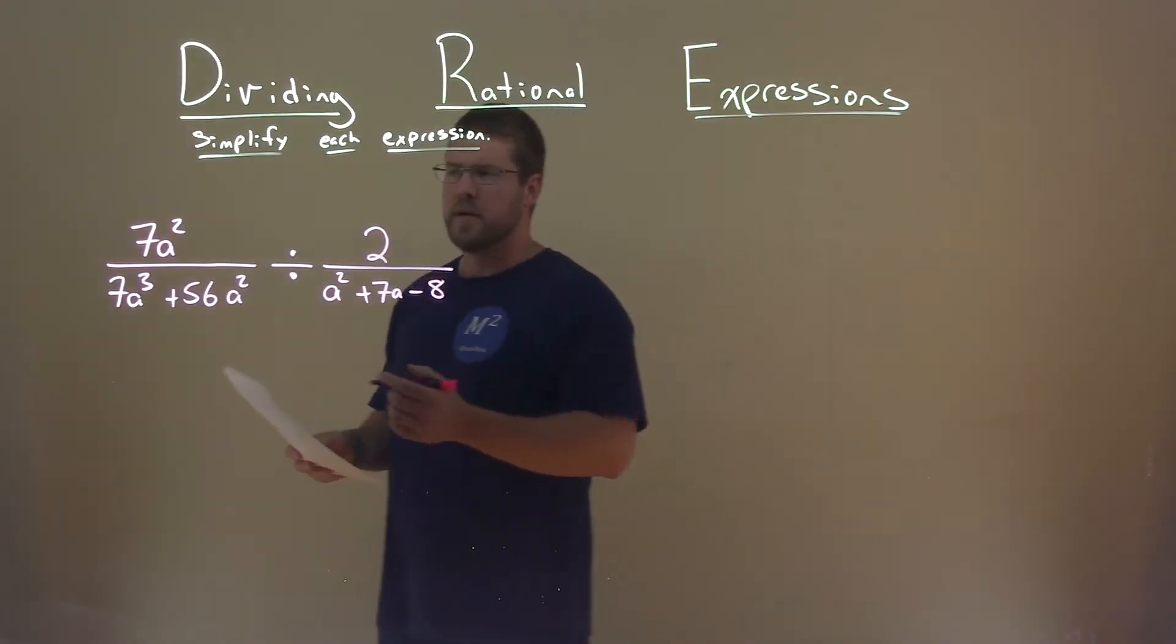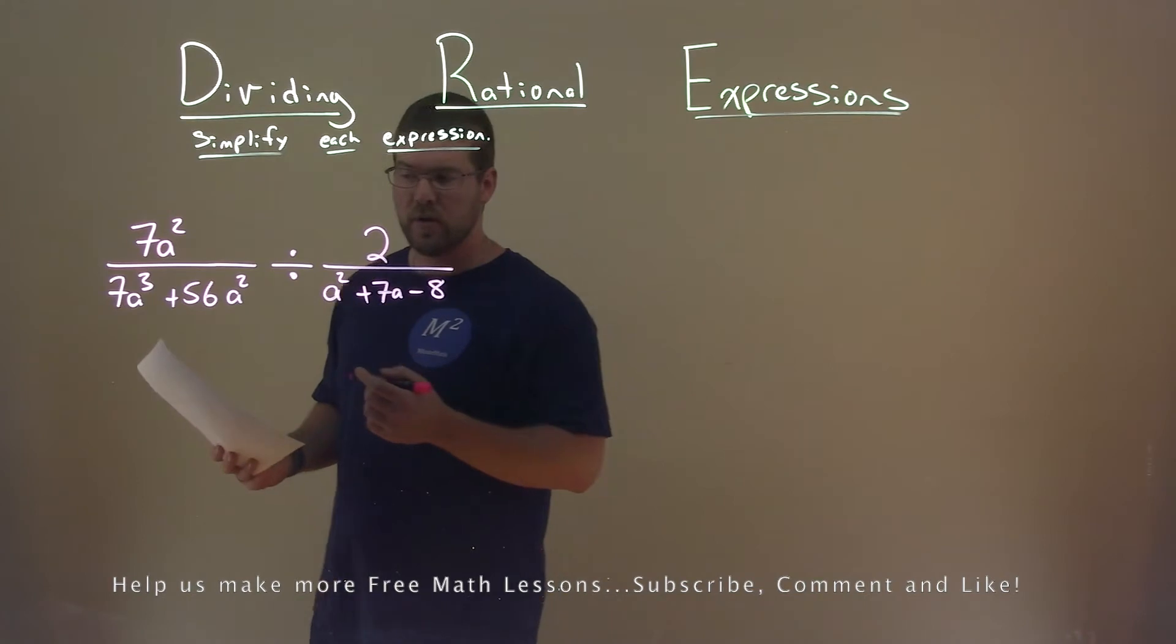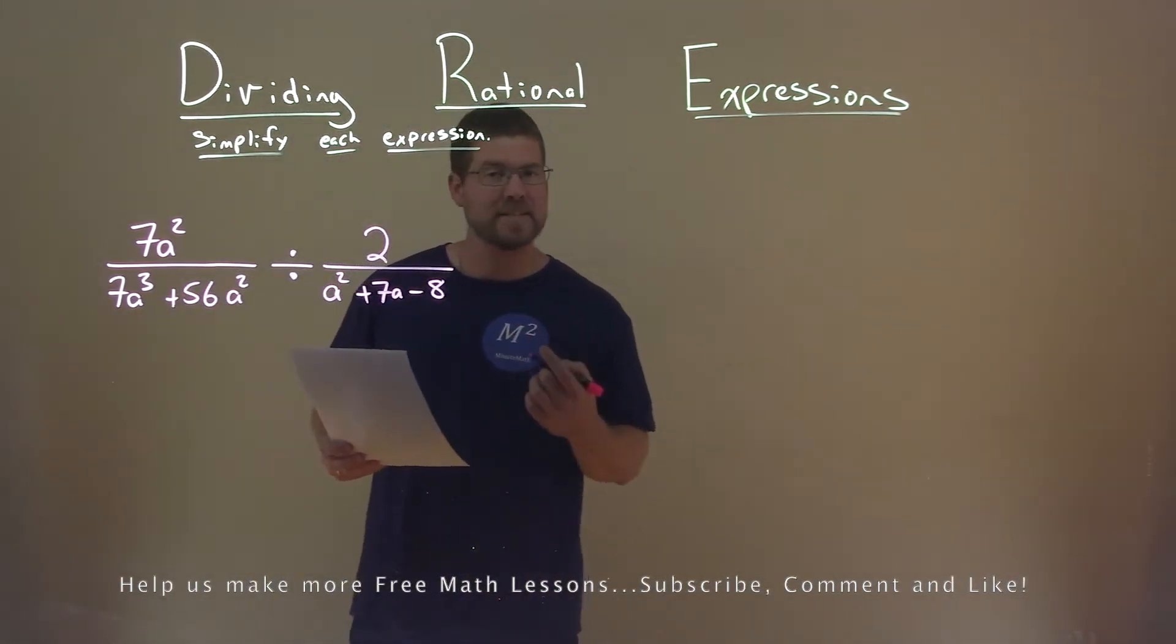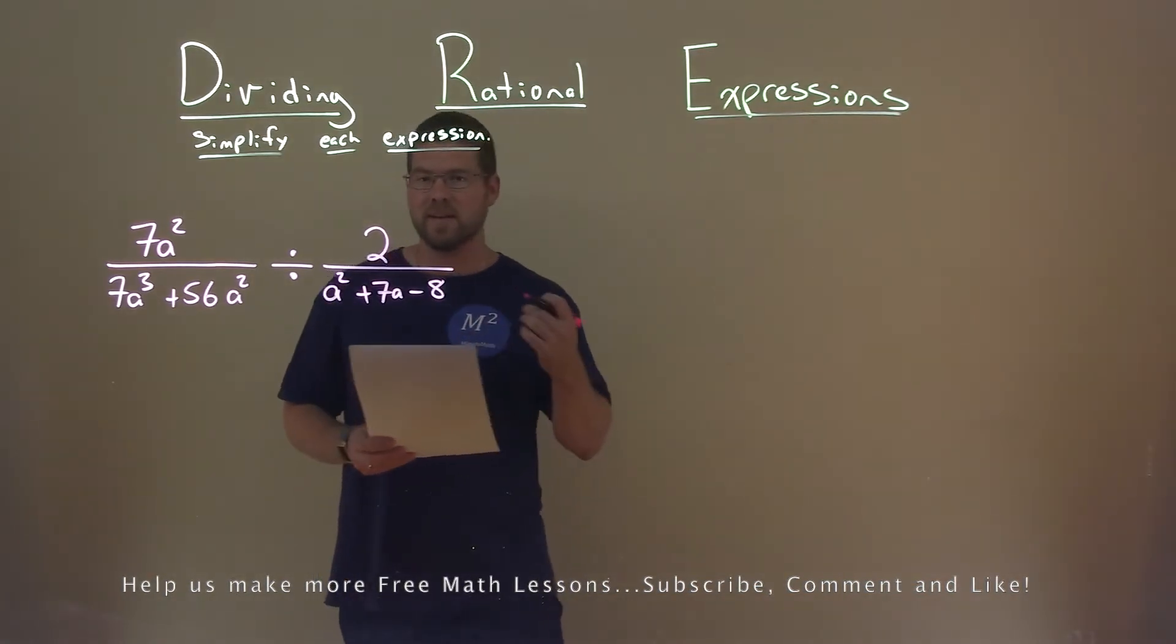We're given this expression right here: 7a squared divided by 7a to the third plus 56a squared, divided by 2 over a squared plus 7a minus 8, and we need to simplify this expression.